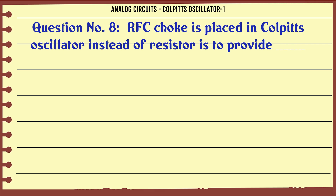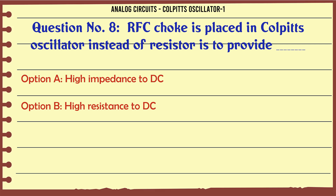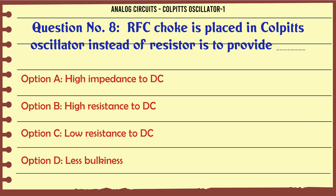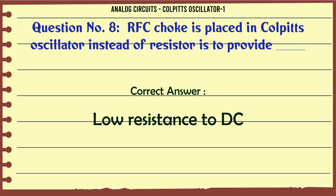RFC choke is placed in Colpitt's oscillator instead of a resistor to provide: A) High impedance to DC, B) High resistance to DC, C) Low resistance to DC, D) Less bulkiness. The correct answer is: Low resistance to DC.